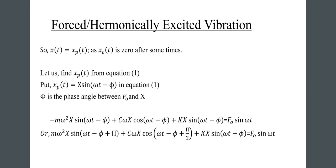So x(t) equals x_p(t) as x_c(t) goes to zero after some time. To find x_p(t) from equation 1, put x_p(t) equal to X·sine(omega·t minus phi) into equation 1, where phi is the phase angle between f-naught and x.